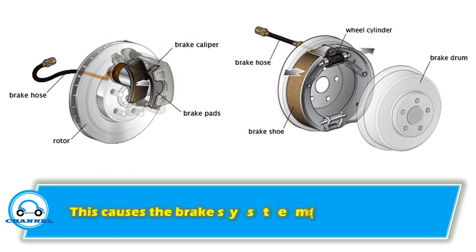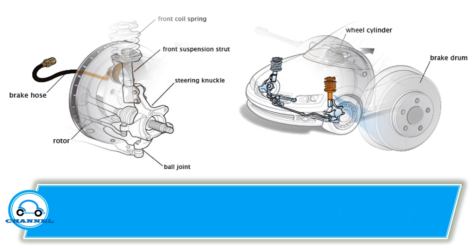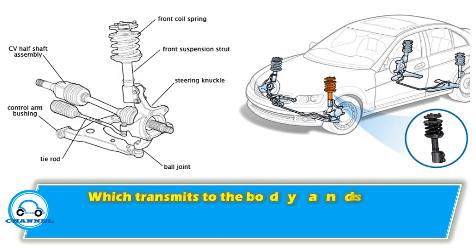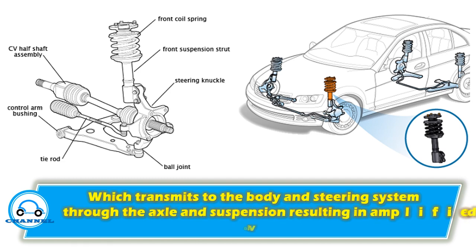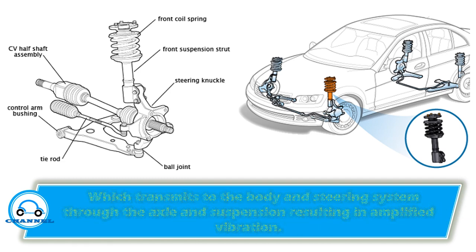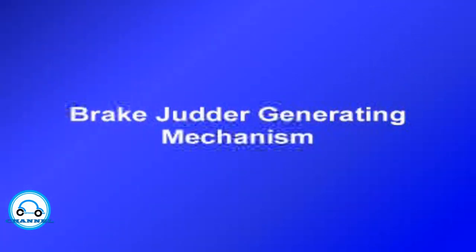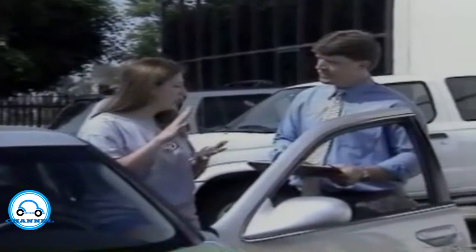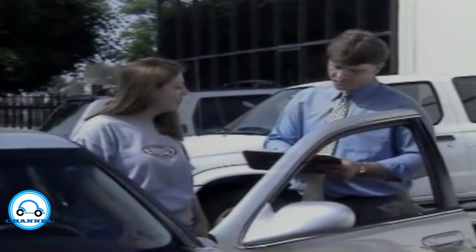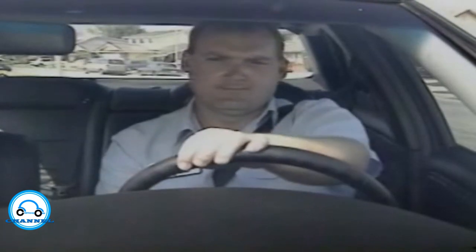This causes the brake system disc or drum to vibrate, which transmits to the body and steering system through the axle and suspension, resulting in amplified vibration. This customer is concerned about a brake pedal vibration when braking from high speeds — sounds like brake judder. After a quick road test, we verified that we are dealing with a brake judder concern.